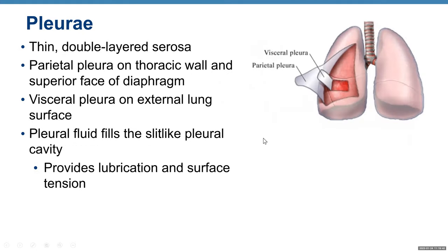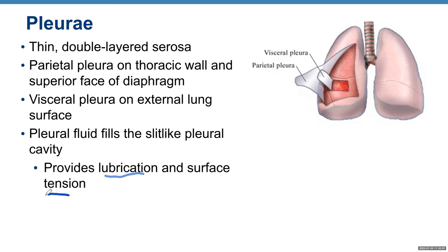The pleura is a thin, double-layered serous membrane. Parietal pleura covers the thoracic wall and superior surface of the diaphragm; visceral pleura covers the external lung surface. Between them is the pleural cavity filled with pleural fluid, which provides lubrication and surface tension.